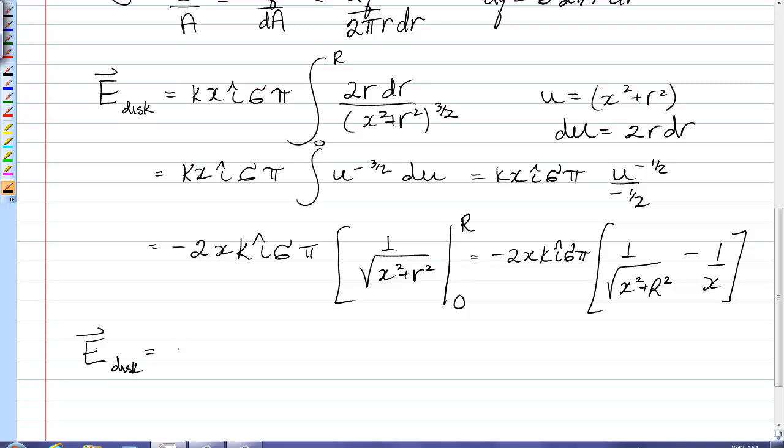Now the quantity in brackets is actually negative, so I'm going to fix this up a little bit. I'm going to get that negative in there, switch the direction, and I'm going to put the x in there as well. So I have 2k i hat sigma pi. Switching it around, taking the x in, I get 1 minus x over the root of x squared plus r squared.